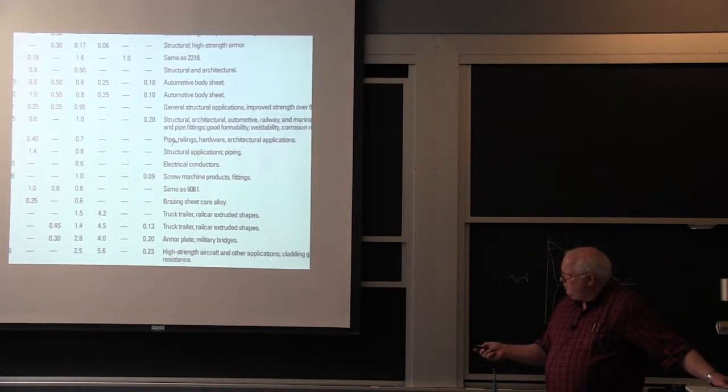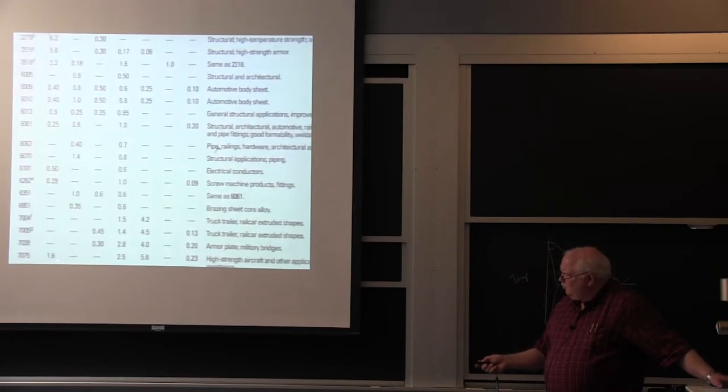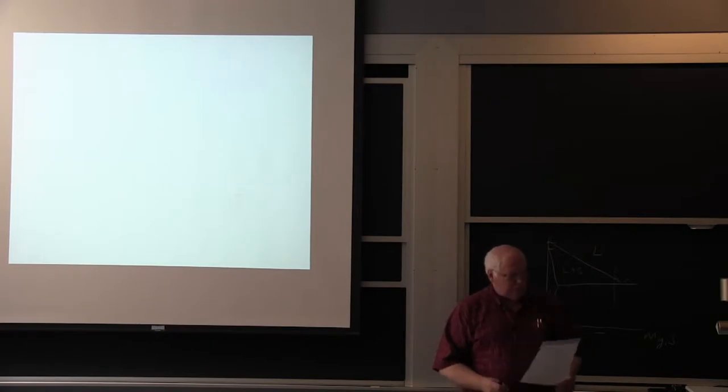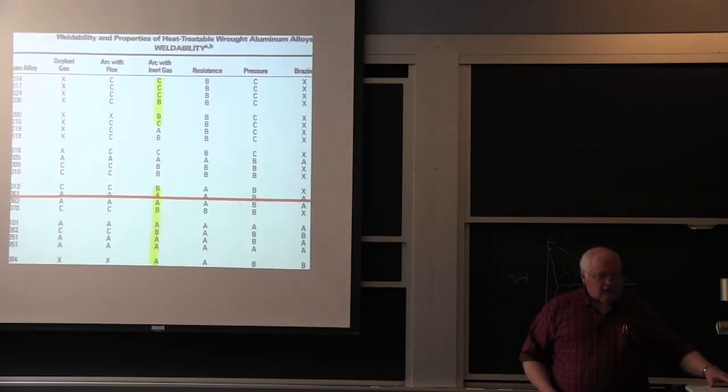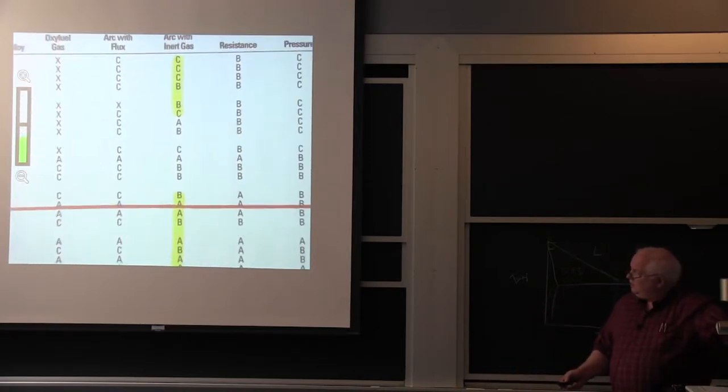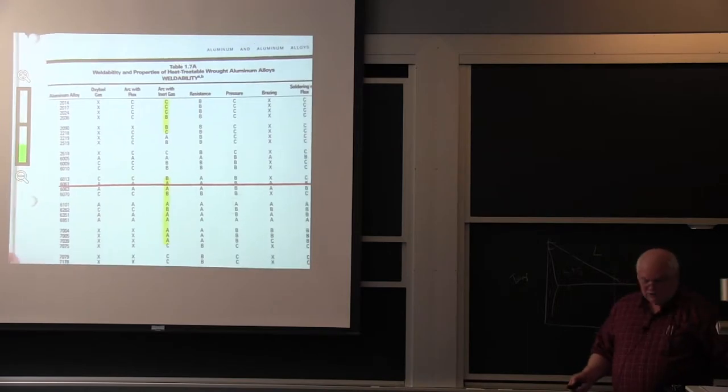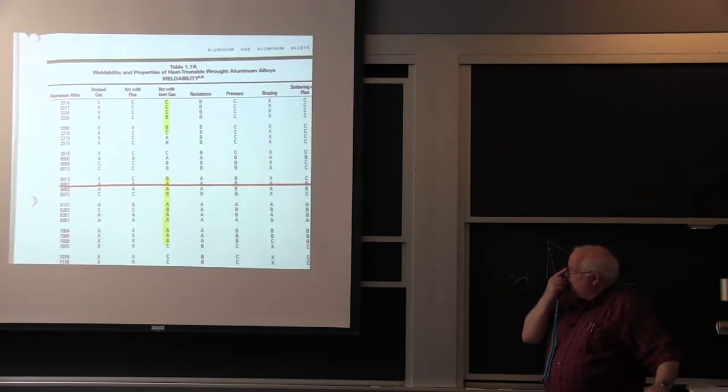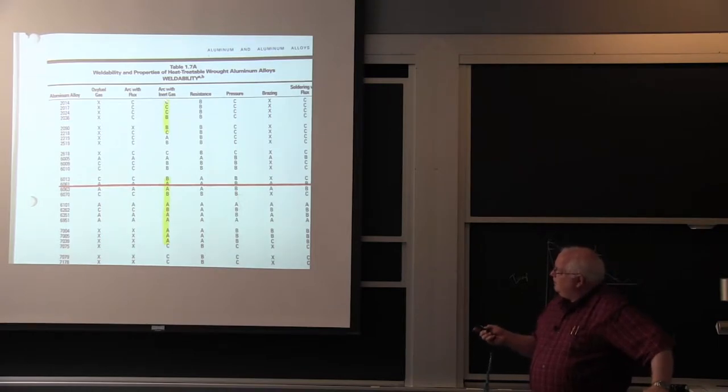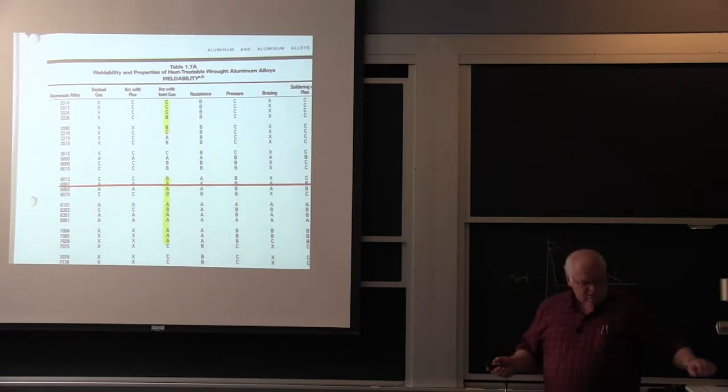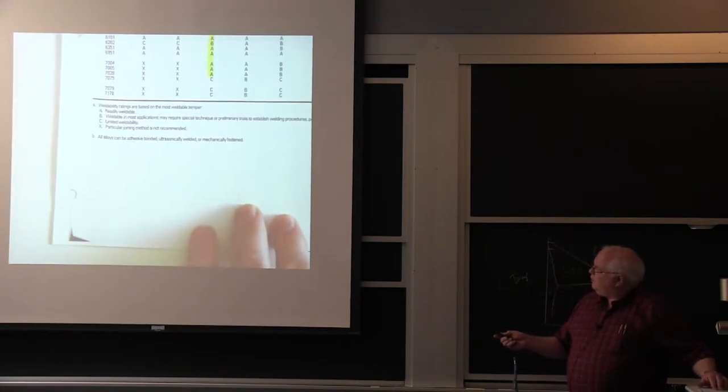We have 7075 high strength aircraft and other applications but we really don't weld the 7000 series most of the time. They like to rank the aluminum alloys in terms of their weldability. So this is sort of an aluminum association table, most aluminum association tables came out of either Alcoa or Alcan. And here's your 2000 series and A is good weld. A is readily weldable, B is weldable in most applications may require special technique or preliminary trials, which means it's not that weldable folks. And C is limited weldability, which don't bother.